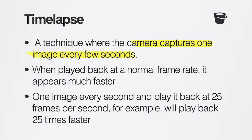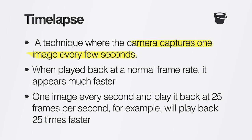Time lapse is a technique where your camera captures one image every few seconds. When that's played back at a normal frame rate, it appears much faster than it actually is. For example, if you take one image every second and play it back at 25 frames per second, it's going to play back 25 times faster. Many modern smartphones have time lapse features, and you can download apps that do the same thing. The secret is to position your camera in a stable place and start recording. You could capture amazing footage of light and shadows passing across rooms, or capture a frame every minute and film yourself working for an entire morning. Time lapse is totally cool, and you should do it.